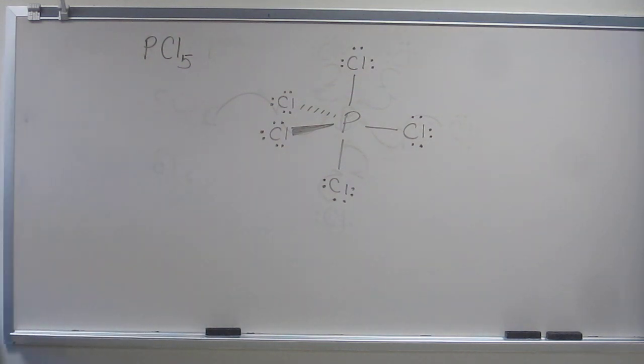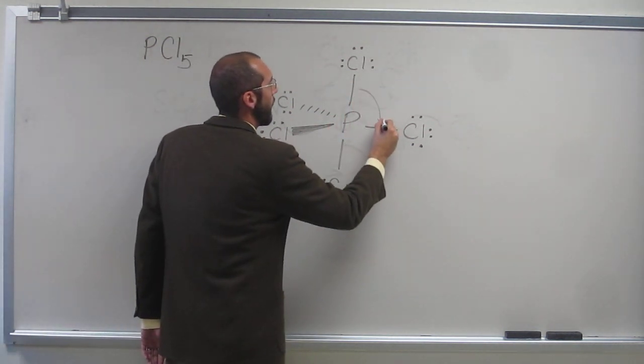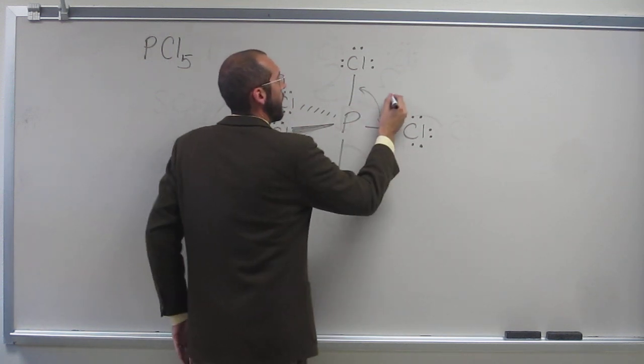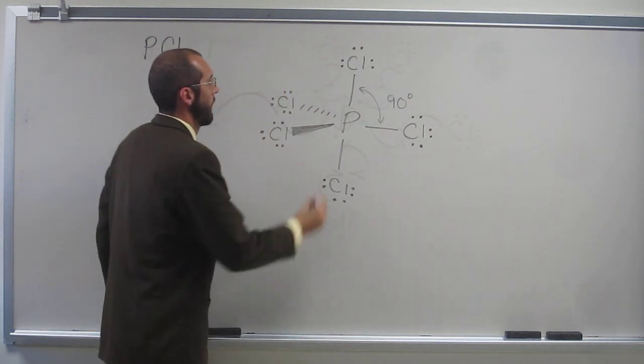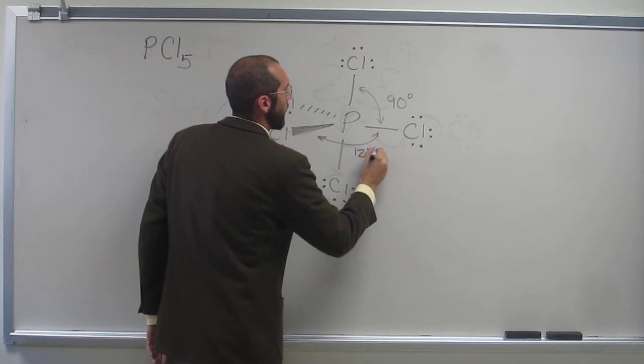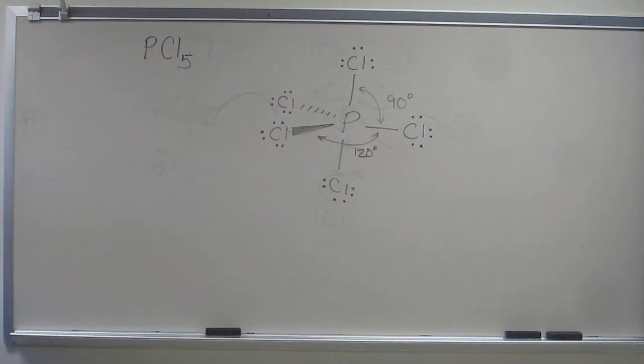This thing is called bipyramidal. So if we look, this bond angle here is 90 degrees. And this bond angle here is 120 degrees. As you would expect. So trigonal bipyramidal. Right? So there's two triangles on top of each other.